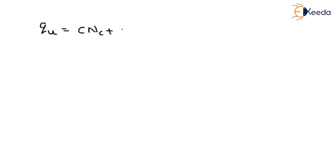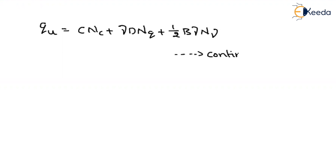Write the equation enough times so that you will not commit any mistake further. QU will be written as C·Nc plus γ·D·Nq plus one-half times B times γ times Nγ. This is applicable for the continuous footing, or we can say it is applicable for the strip footing.